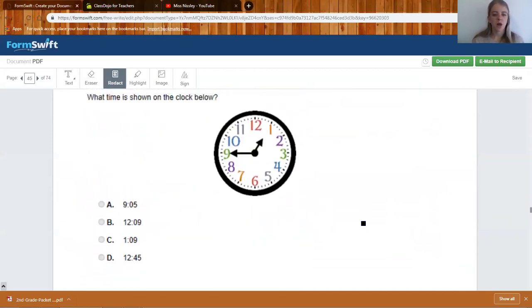Time is shown on the clock below. Again, the hour hand is the little hand in between the 12 and the one. So you should go with the 12. So it's either B or D. And again, the minute hand is on the nine. That does not mean that it is nine minutes. Let's count by fives. 5, 10, 15, 20, 25, 30, 35, 40, 45. It is 12, 45. D.